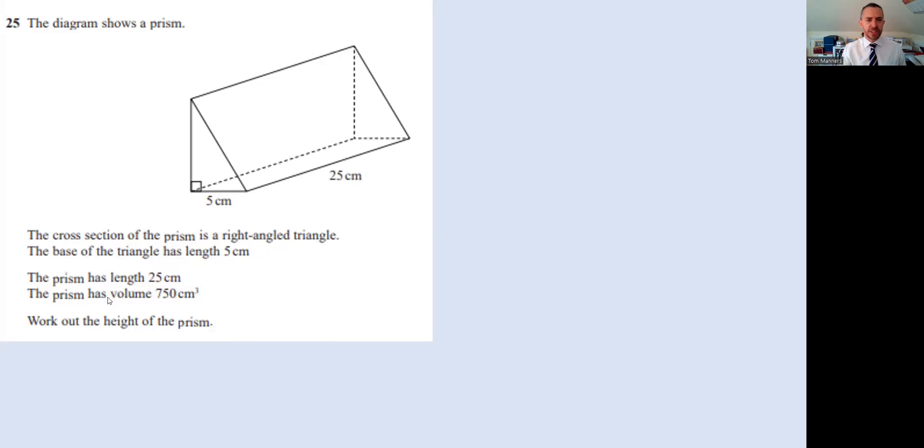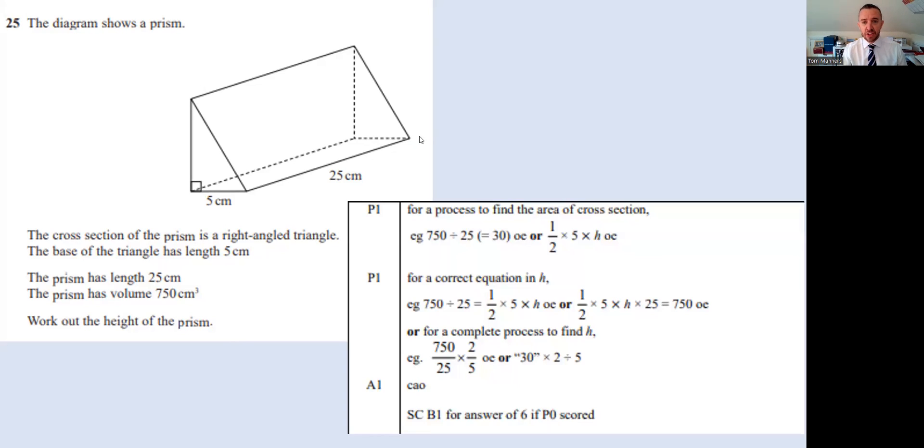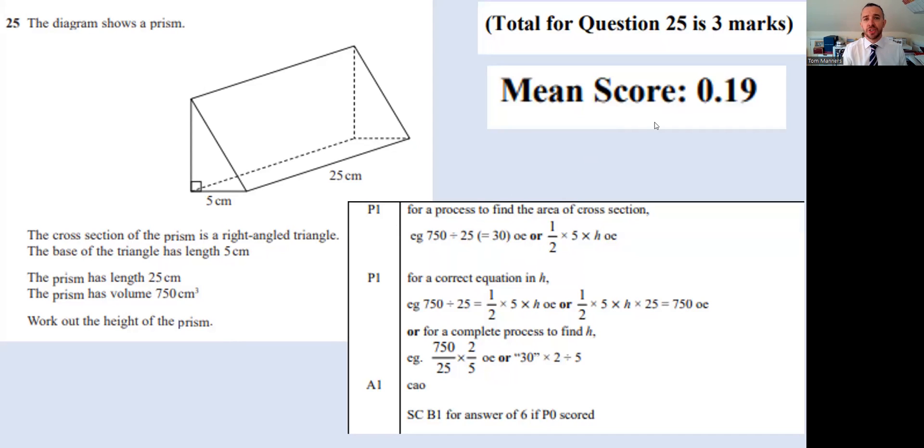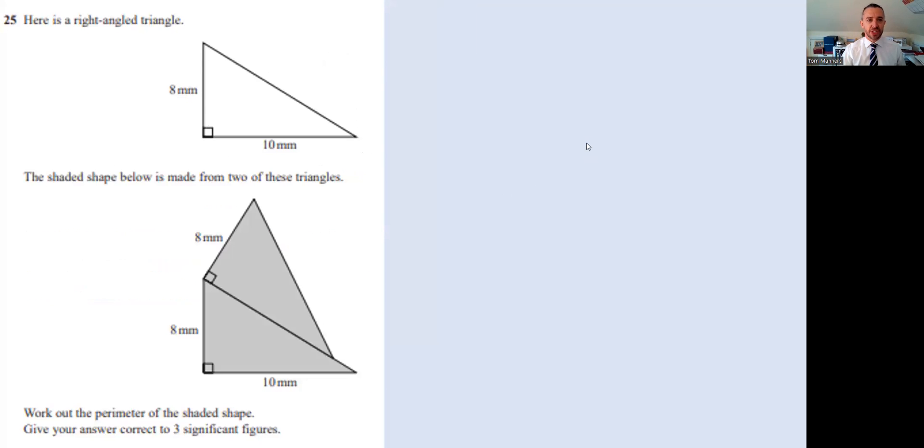I see the word volume. I see the word prism. Is that on the formula sheet? Yes, it is. Volume of prism is on there. Let's have a look at it to find the area to substitute into the equation. It's the first mark, the process mark. Three marks. The mean score across the country was 0.19. It's about beating those people. If you get one mark, you're beating most of the country.